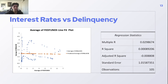Looking at interest rates versus delinquency, we see the same effect. Lowering interest rates seems to have no true effect on the delinquency rate, as the majority of businesses can't loan at the Fed funds rate. Additionally, businesses that may be insolvent — unable to make interest payments at 2% — may still not be able to make payments at 1% if their businesses were shut down and they have no income.